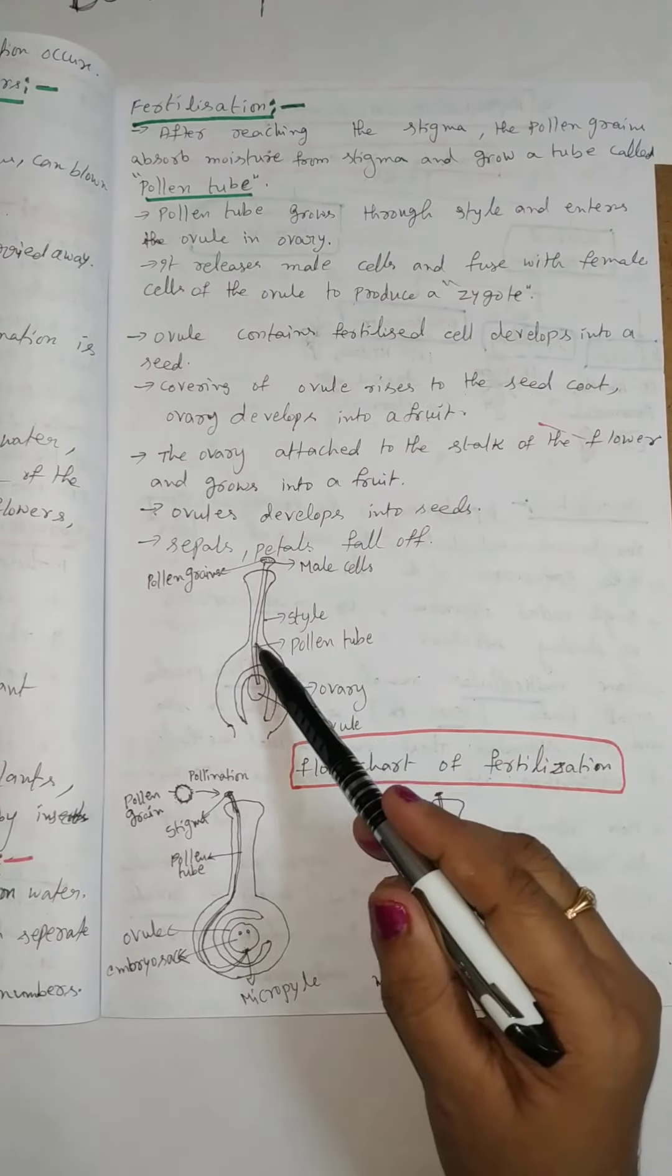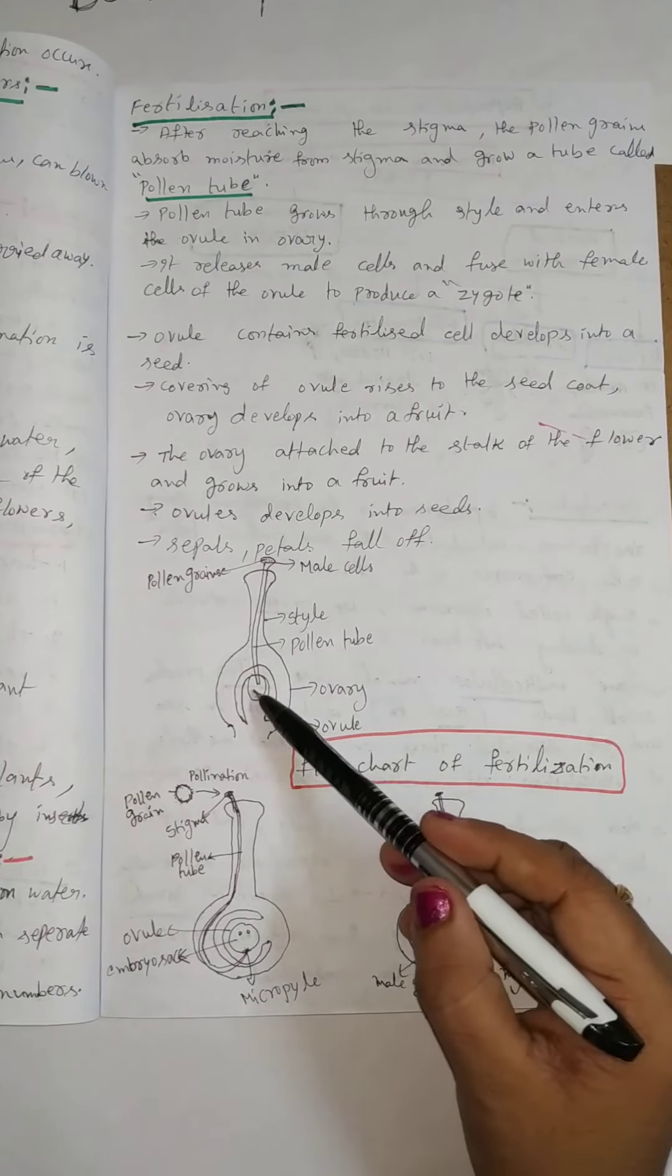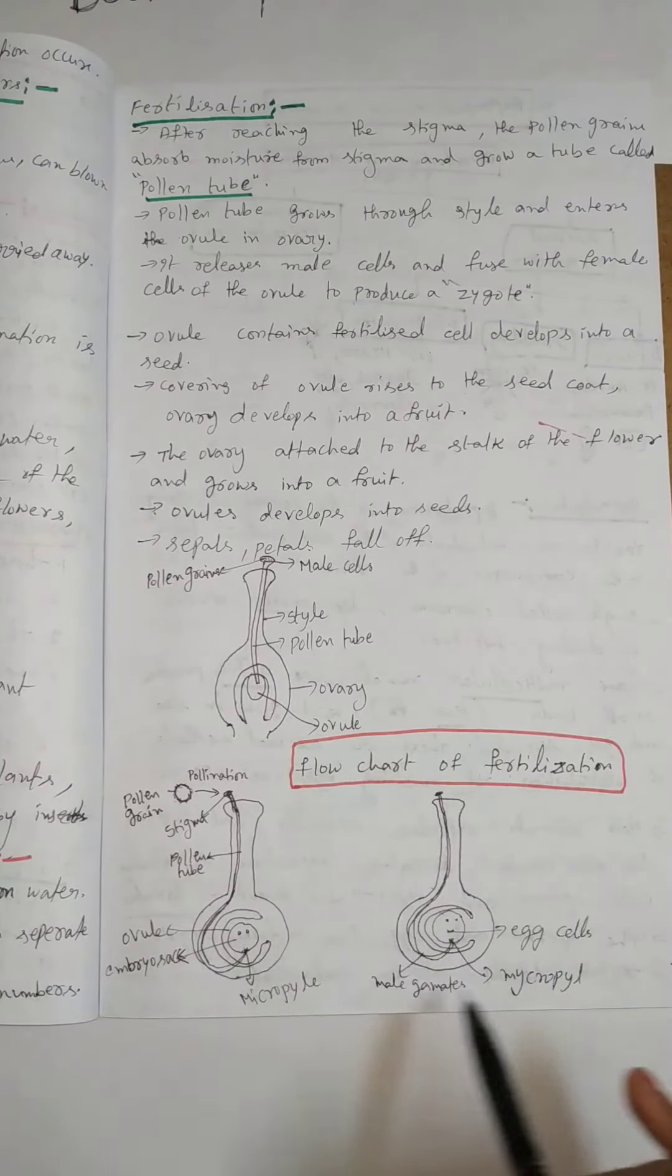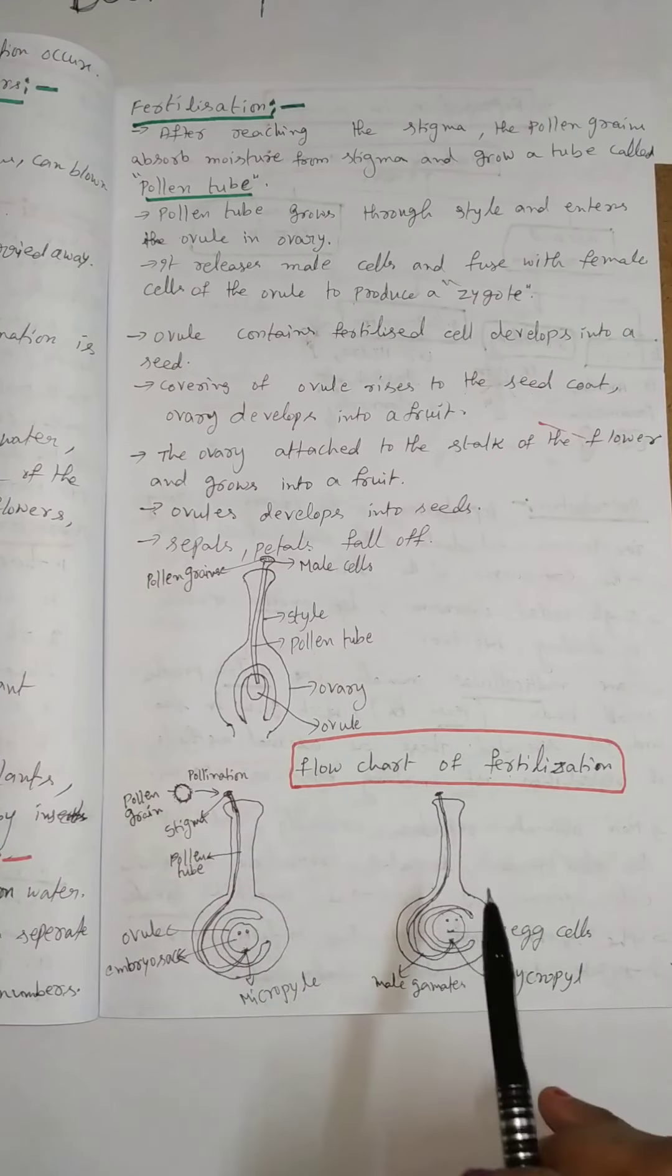And the pollen tube releases male gametes in the ovary. This is the final diagram of the fertilization.